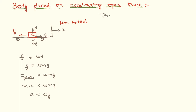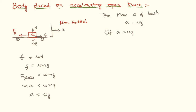Therefore, the maximum acceleration with which the truck can move so that the block does not slide is equal to μg. If the truck moves with an acceleration greater than this, the body will start moving because the pseudo force will dominate the frictional force. If the acceleration of the truck is greater than μg, then the resultant force on the block equals pseudo force minus frictional force.